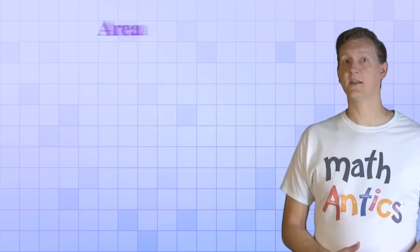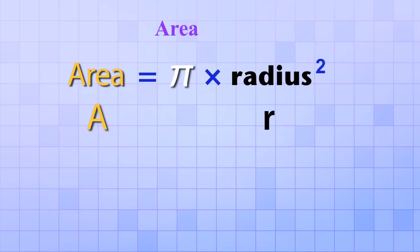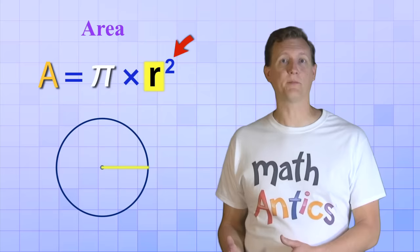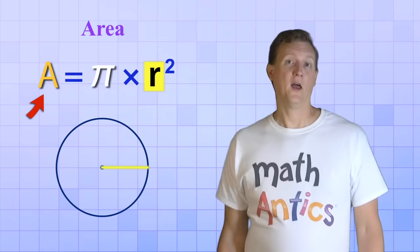The formula for finding the area of a circle is area equals Pi times radius squared. Again, we can use abbreviations to make it shorter: A for area and R for radius. Now this is a pretty simple formula too. It tells us that if we know the radius, we just have to square it and then multiply that times Pi to get the area.